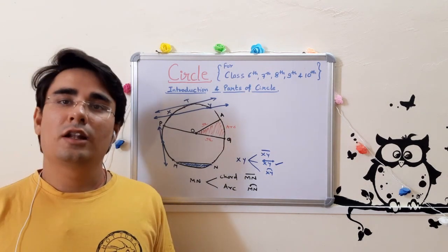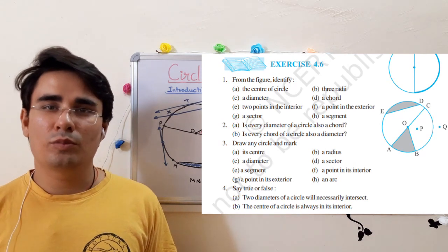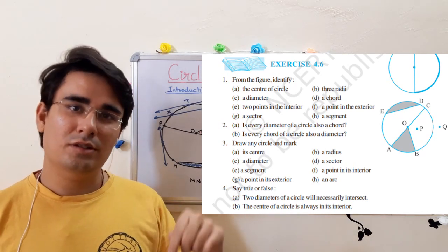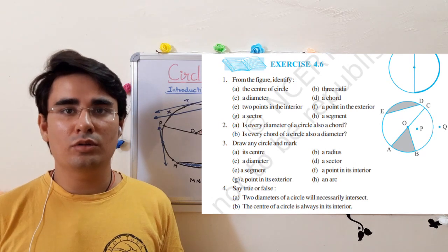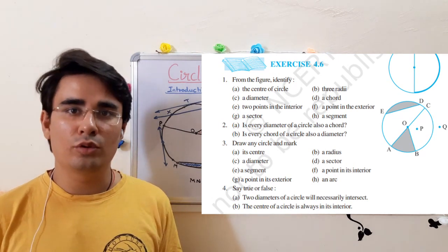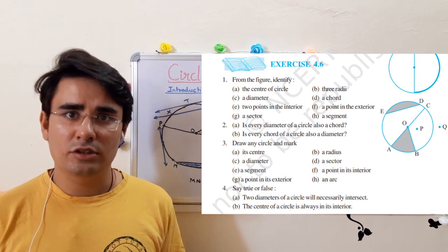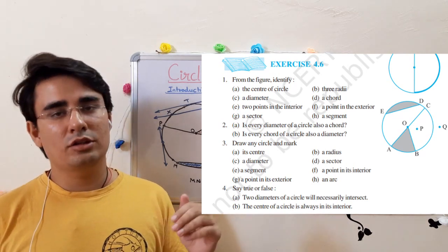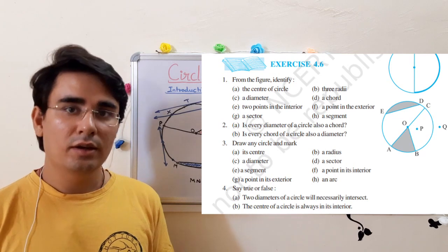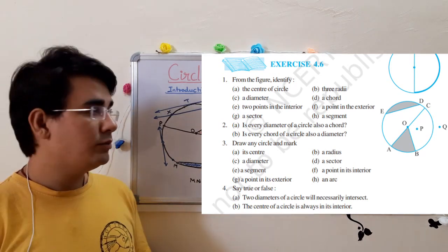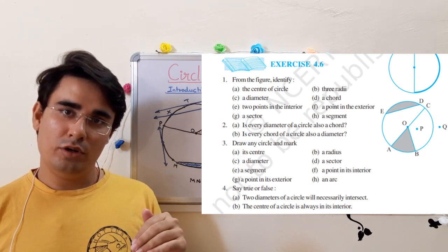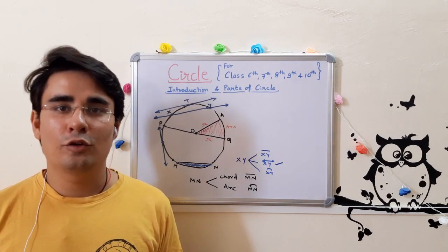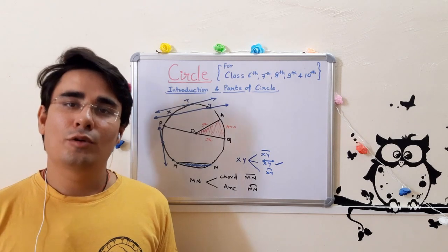So here are the parts of the circle and we have talked about the definitions. In the next class we will see some related questions, exercise 4.6, grade 6 NCERT. If you don't have NCERT textbook, then you will find the link in the description box. If you have any board like ICSE or IB, there is no difference. You should understand the concept. Before going, don't forget to subscribe to the channel for the latest videos. Thank you for watching, see you in the next video.